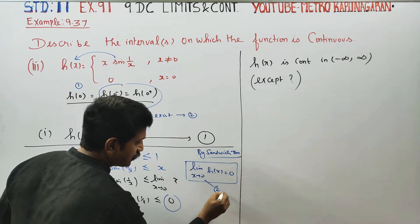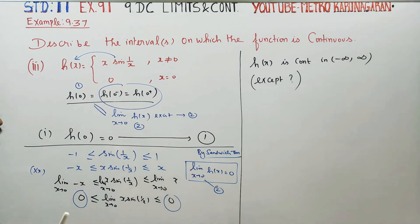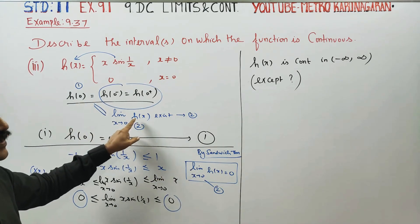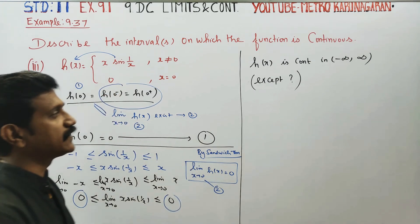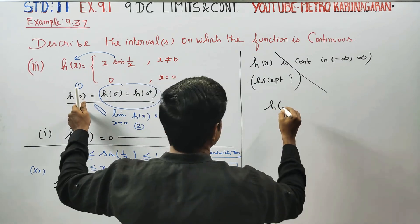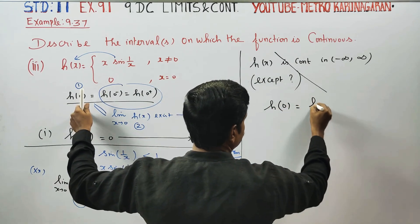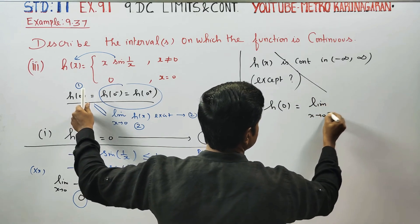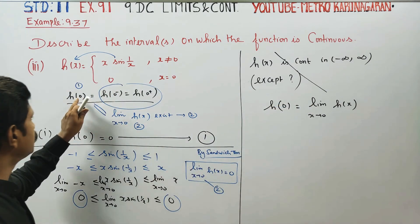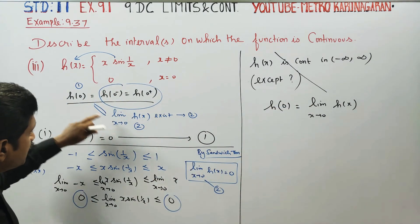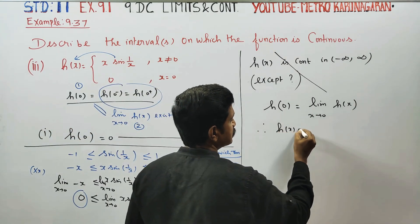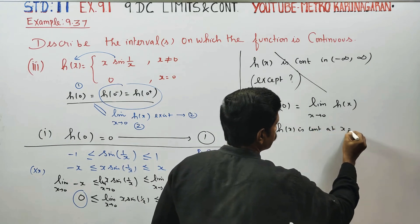This is result number 2. Result number 1 gives answer 0. Result number 2 gives answer 0. So h(0) = 0 = limit as x tends to 0 of h(x). Therefore h(x) is continuous at x = 0.